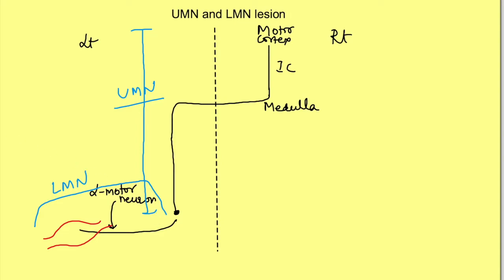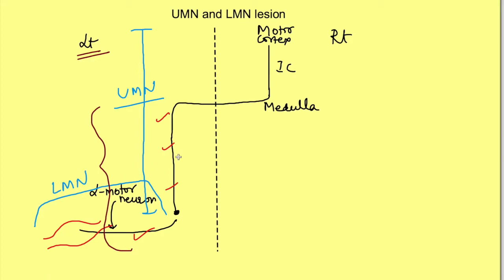If the injury is anywhere after the crossing over — that means in the spinal cord — we will get same-side signs and symptoms. If there is a left-sided injury of the spinal cord, since the fibers are supplying the same side of the body, there will be left-sided muscle weakness or paralysis. However, if the injury is in the medulla, internal capsule, or motor cortex, those fibers will cross over. So if there is an injury on the right side of the motor cortex, internal capsule, or medulla, there will be left-side weakness. This can be easily understood just by tracing the pathway.